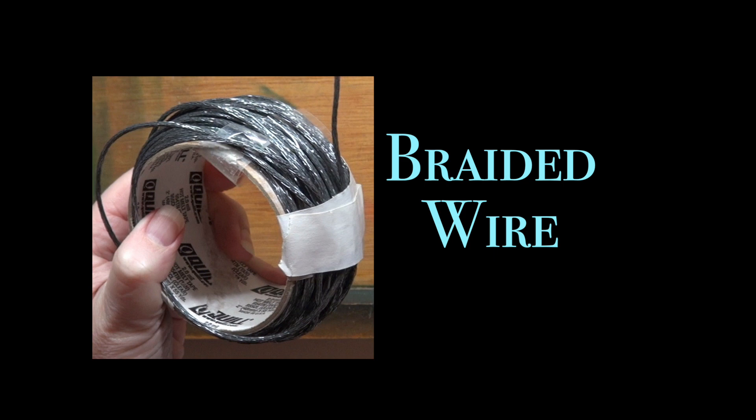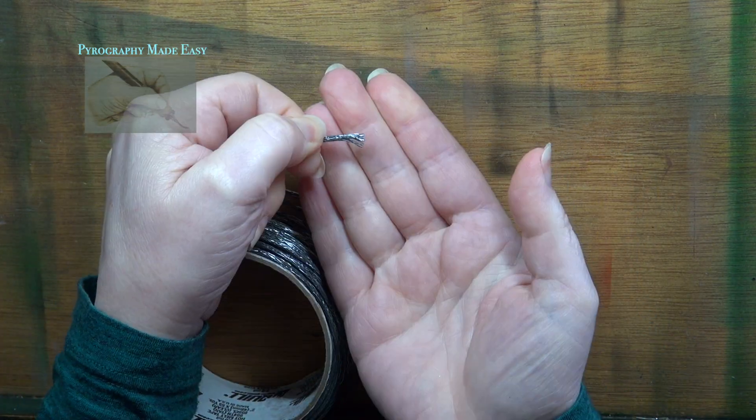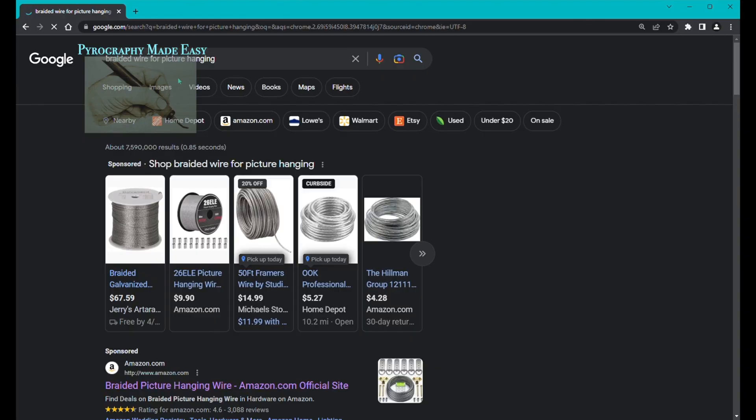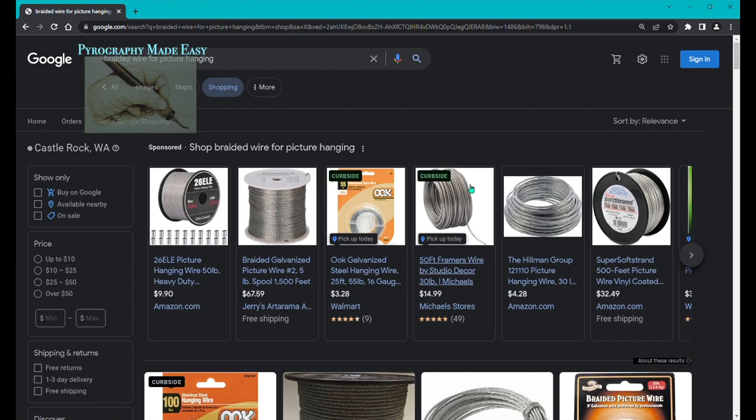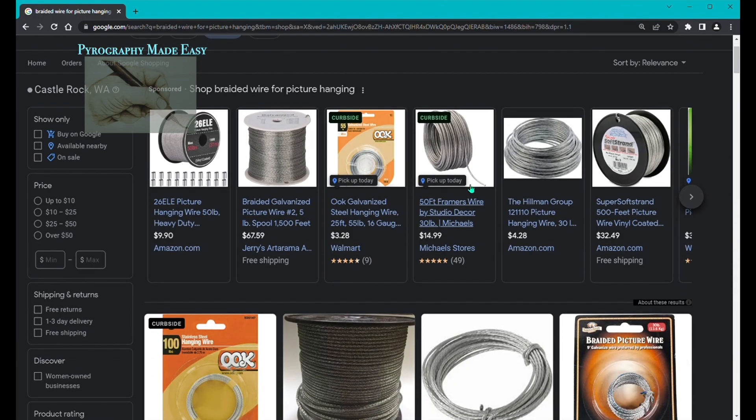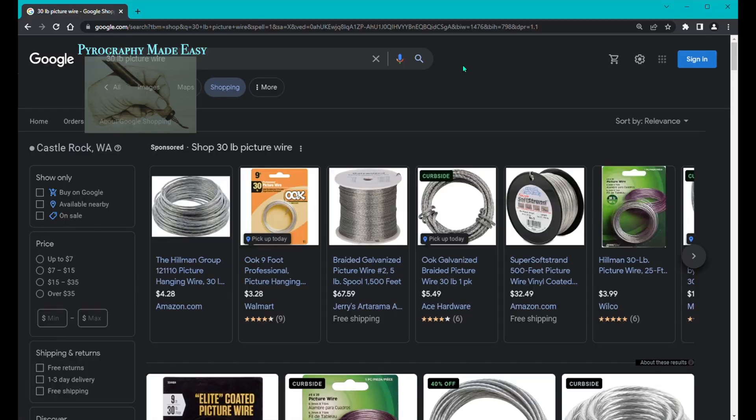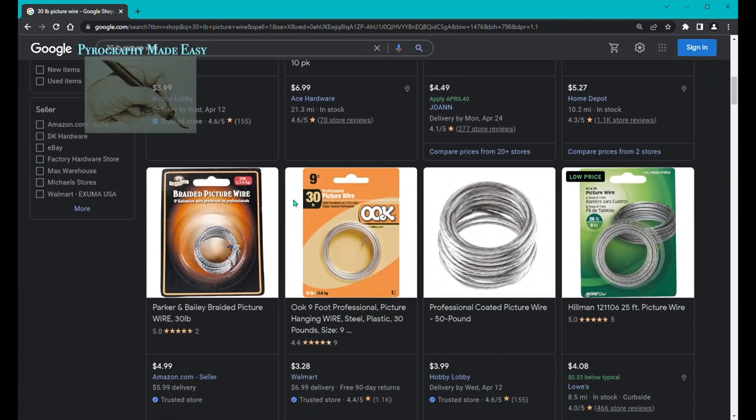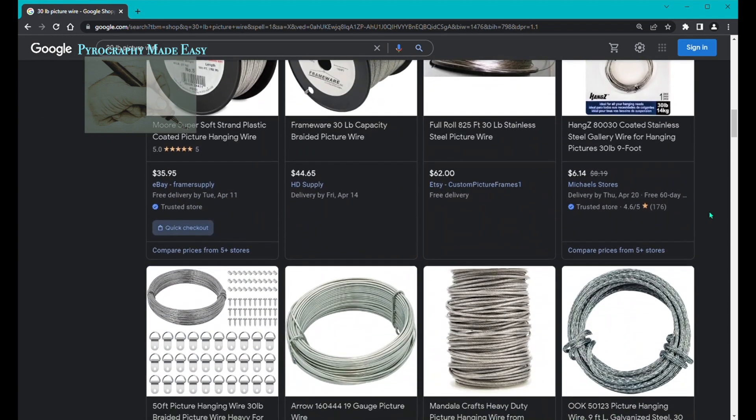Braided wire is nothing more than numerous strands of thin wire braided together for added strength. Braided wire can be found on Amazon, craft stores, numerous online places, and even home improvement stores like Home Depot. Make sure to buy wire that can handle the weight of your artwork. For me, 30 pound wire has been more than sufficient for my art projects.